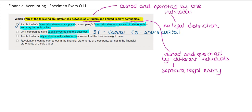The next statement says that a sole trader is fully and personally liable for any losses that the business might make. This is a correct distinction compared to a company, where there is limited liability for the owners. For a sole trader there is no legal distinction between the business and the owner, so they are fully personally liable.